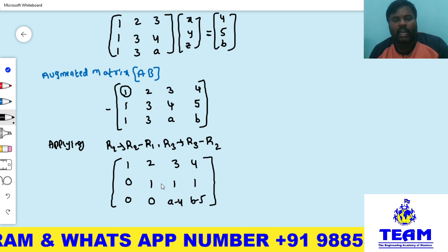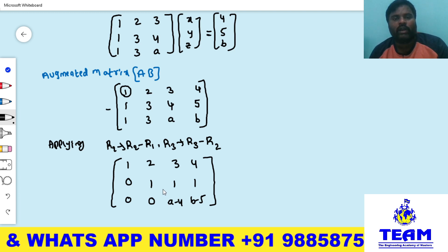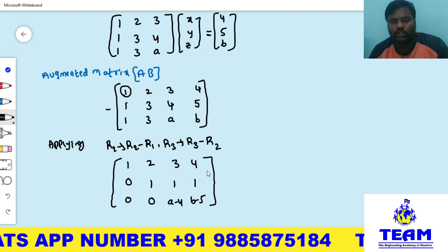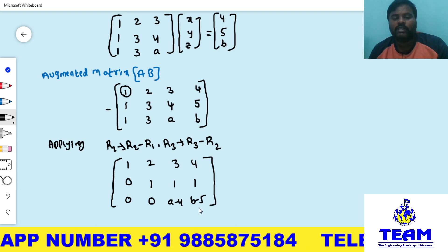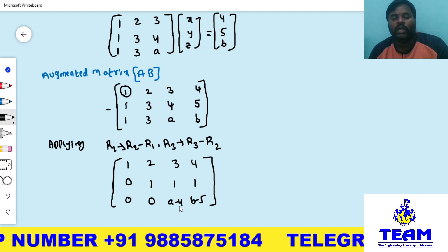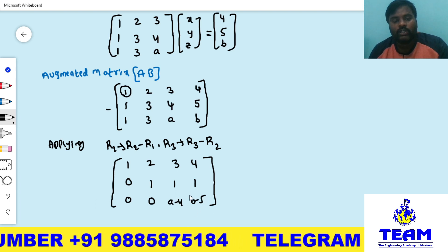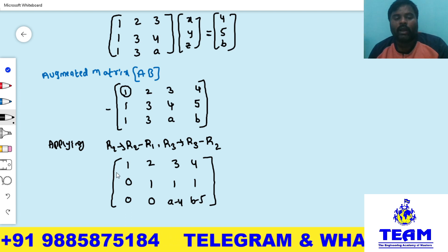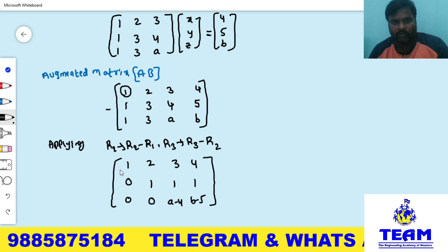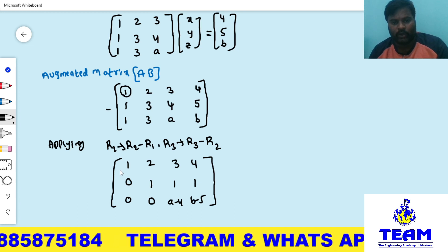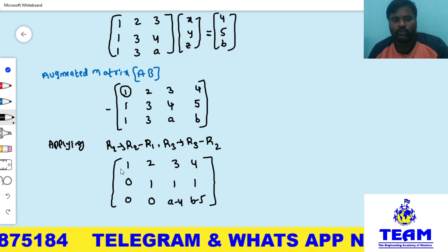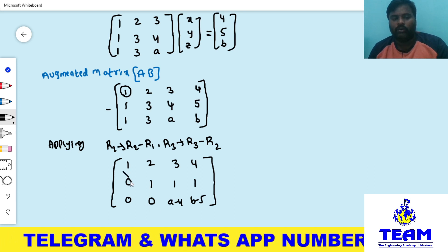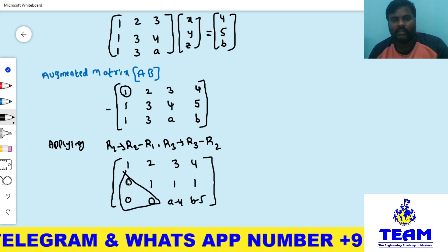We verify this is in echelon form. The first condition — any zero rows must be below non-zero rows — is satisfied. The number of zeros before the first non-zero element increases row by row: 0, then 1, then 2 zeros. So the matrix is now in upper triangular (echelon) form.